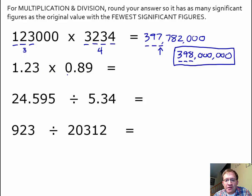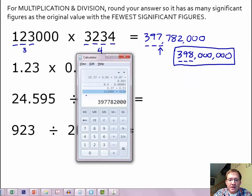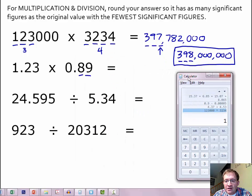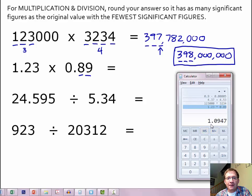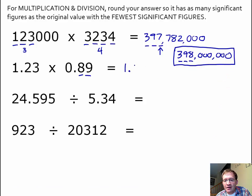Our next example: 1.23 times 0.89. Our answer can only have two significant figures because 0.89 has just two significant figures. Using our calculator, 1.23 times 0.89 gives us 1.0947. We can't have all that — we can only have two significant figures. How would I round 1.0947 to two significant figures? I'd round it to 1.1 — the 0 rounds up to a 1 based on that 9. So 1.1, which has two significant figures, is our answer. 1.0947 had five — too many.